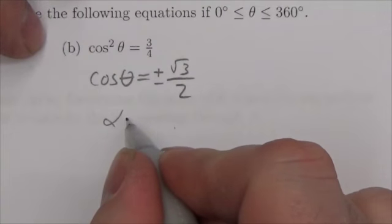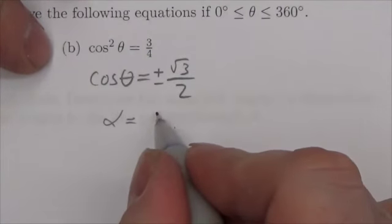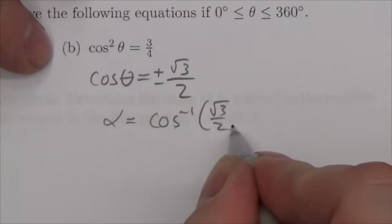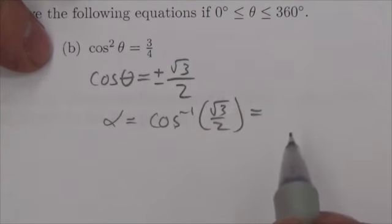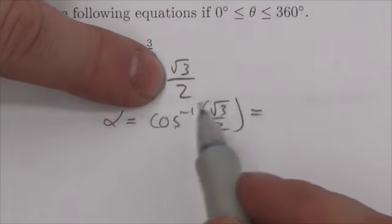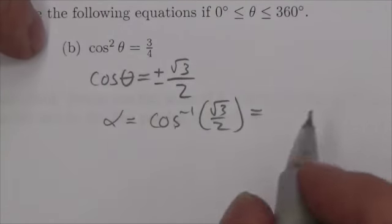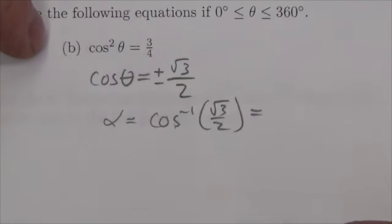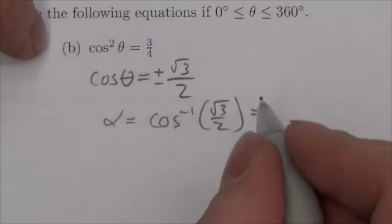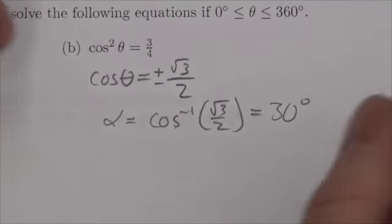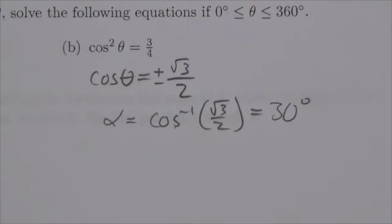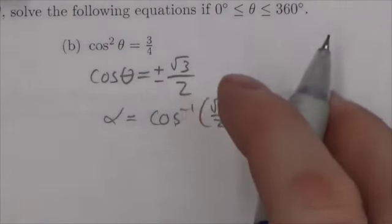So now I find the reference angle by doing the inverse cosine of root 3 over 2 without worrying about the sign. I'm just looking at the value of the ratio here so I can get the value of the reference angle. And when I take the inverse cosine of root 3 over 2, I'm going to get that this is 30 degrees. Now I can either use my calculator or I can think about it in terms of the unit circle or the special triangles. Anyway, I'm going to get 30 degrees.